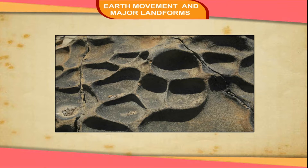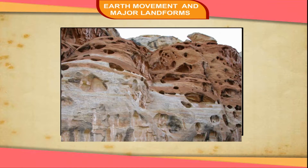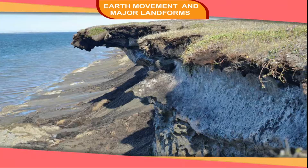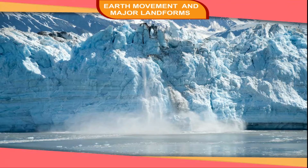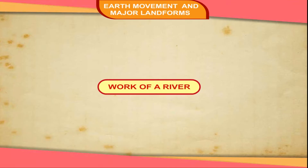Major Landforms. The landscape is being continuously worn away by two processes: weathering and erosion. Weathering is the breaking up of rocks on the Earth's surface. Erosion is the wearing away of landscape by different agents like water, wind and ice. The eroded material is carried away and eventually deposited. The process of erosion and deposition creates different landforms on the surface of the Earth.